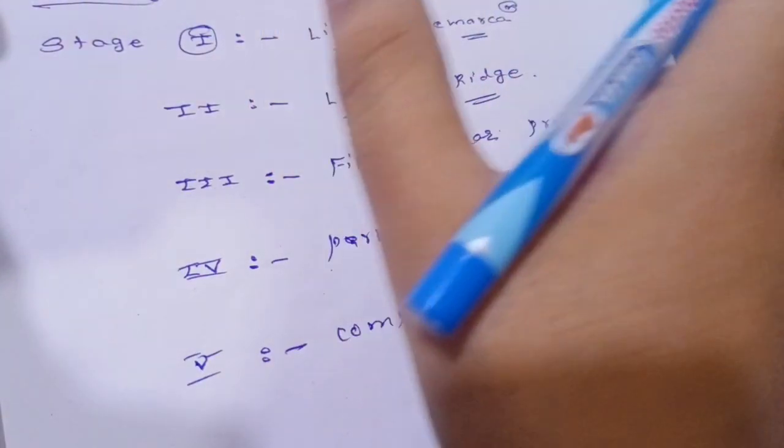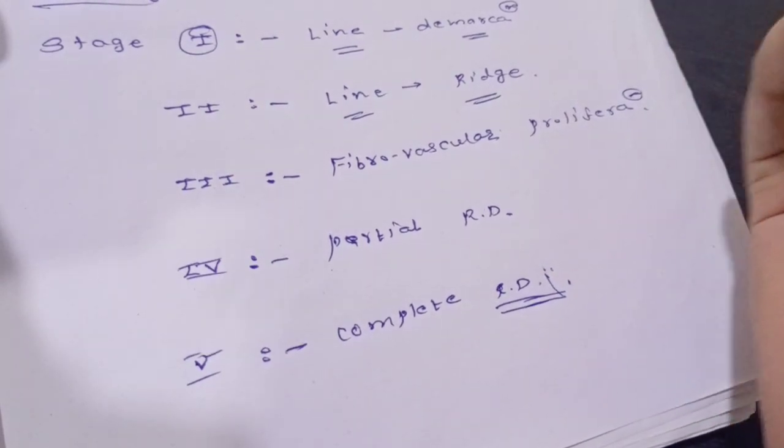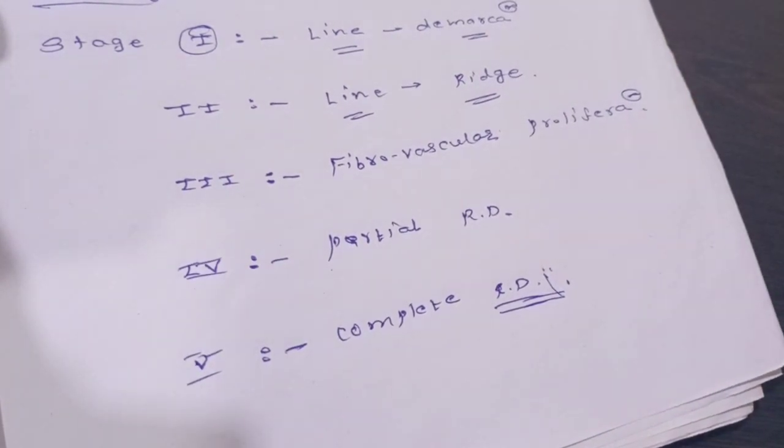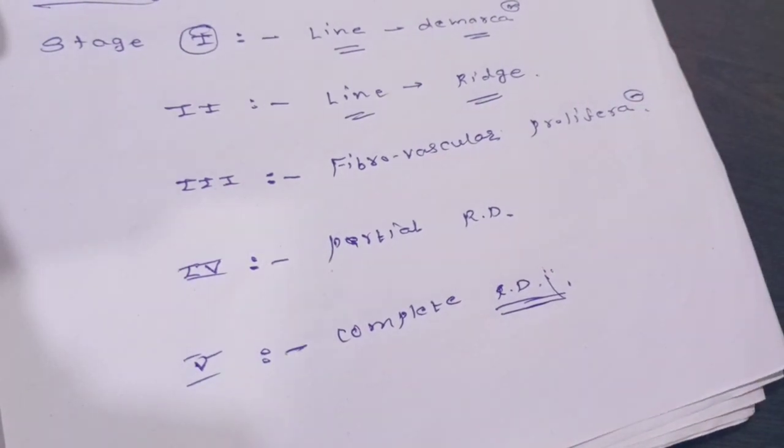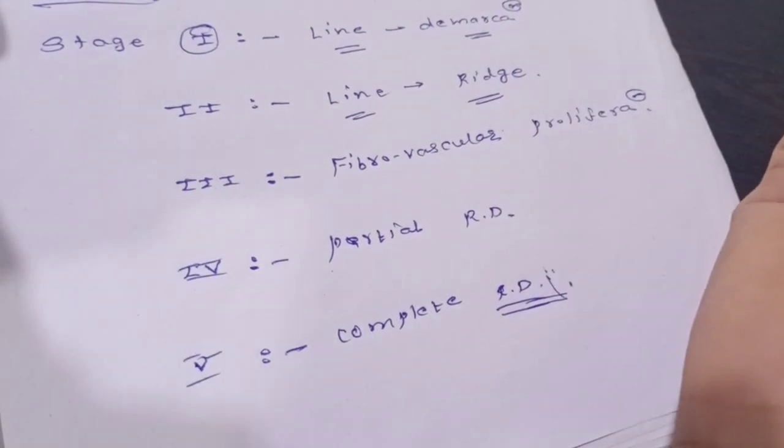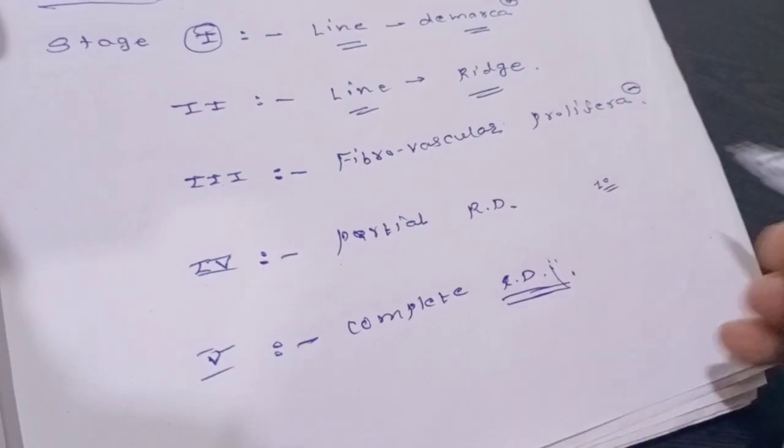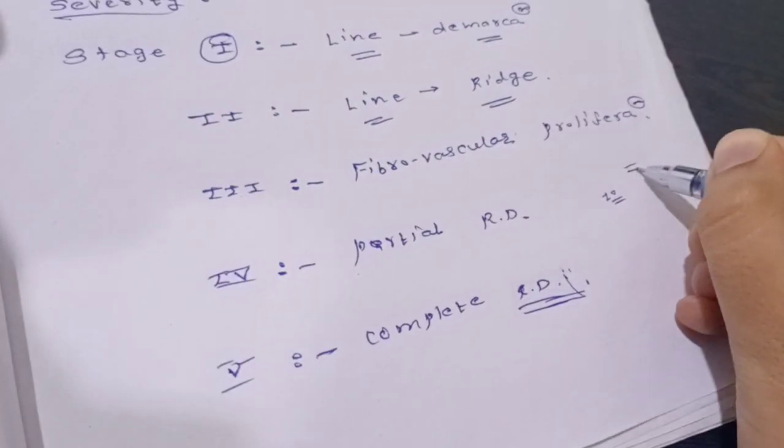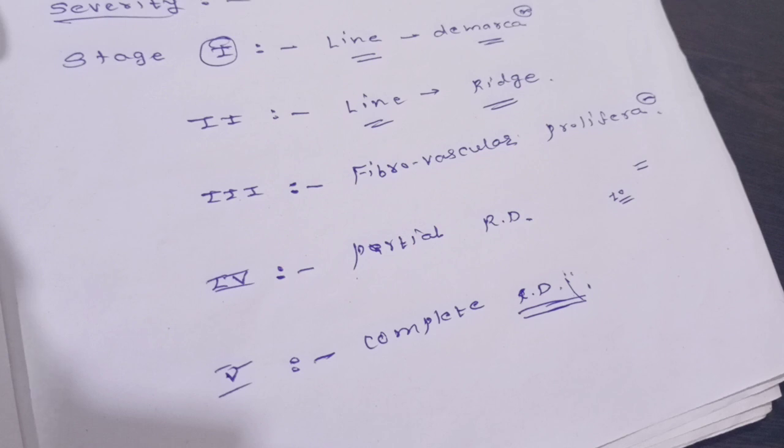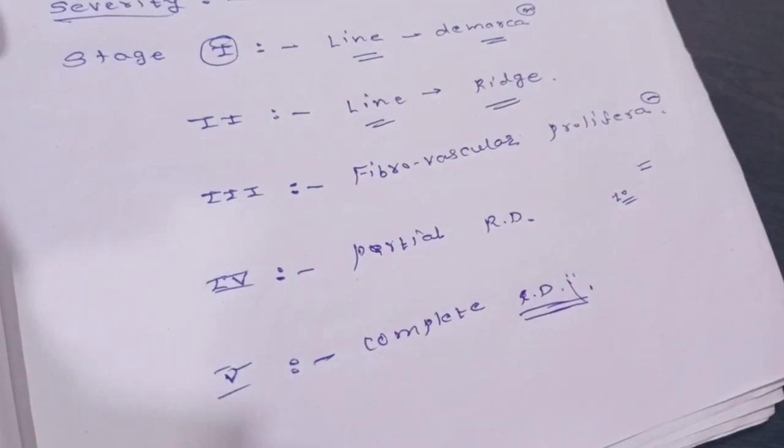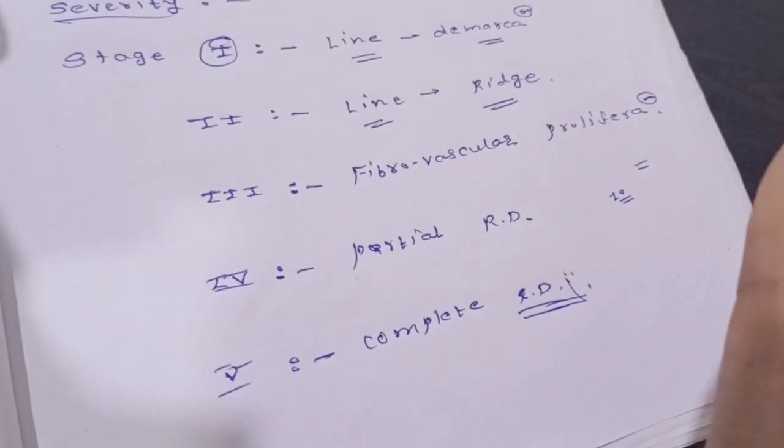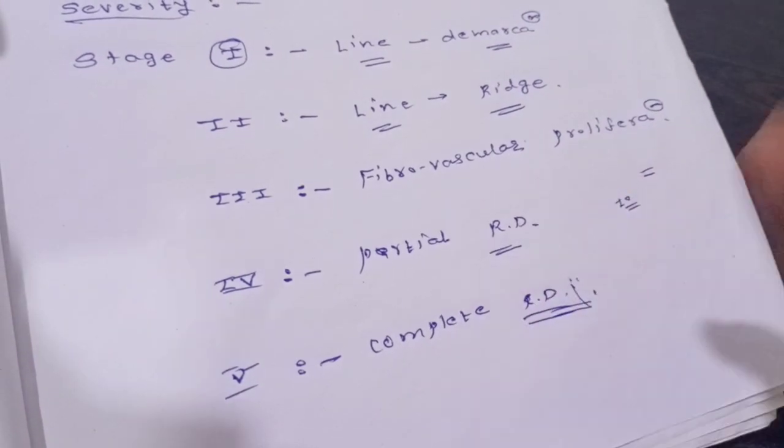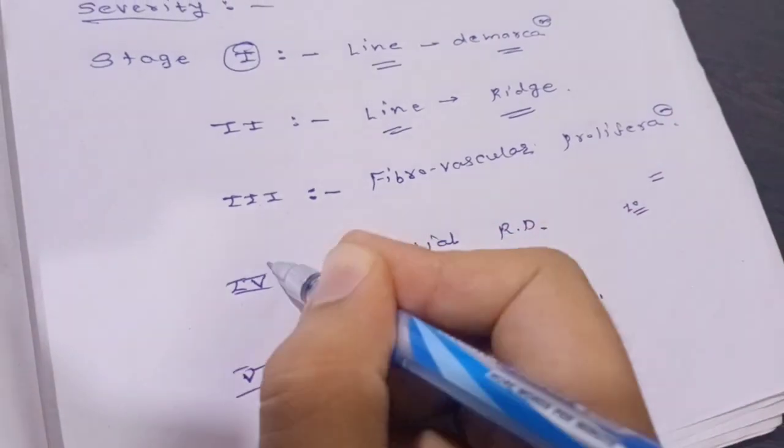It is fibrovascular proliferation with abnormal development of the retina's vascular nature. What it does is pull the retina. The retina has 10 layers: neurosensory retina, retinal pigment epithelium, external plexiform, external nuclear, internal plexiform, internal nuclear, ganglion, and nerve fiber layer. Stage 4 is when the retina gets detached—partial retinal detachment. Stage 5 is total retinal detachment, which is a very dangerous condition.